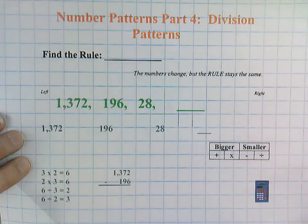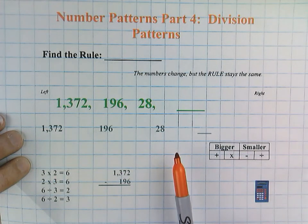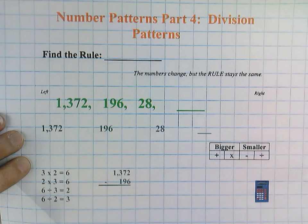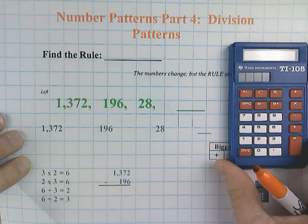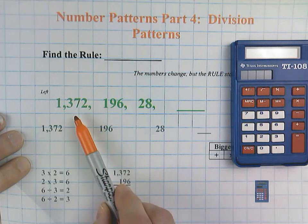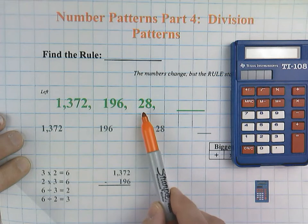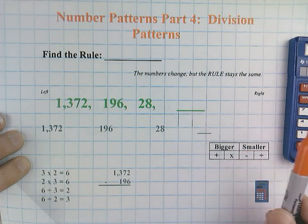Today we're going to focus on rules that involve division. The numbers down here are stretched out a little bit so that we can see the rule in action, and today we will be using our calculator. Let's get started. 1,372, 196, 28, and then blank, and our job is to figure out the rule.